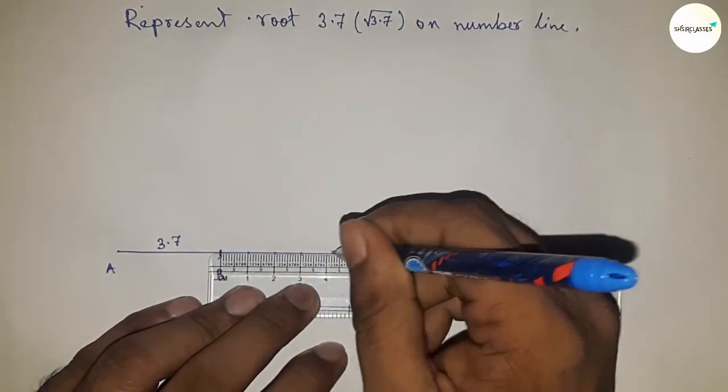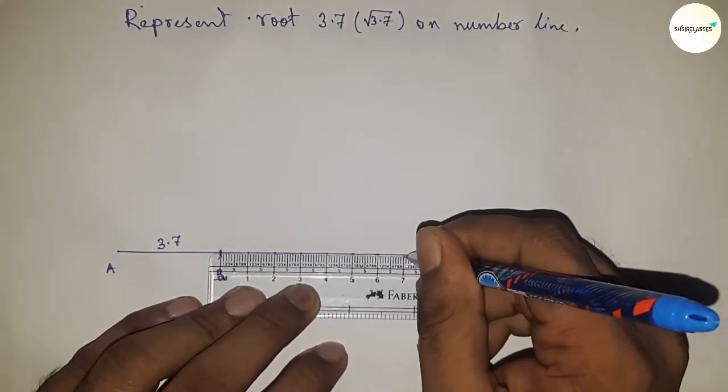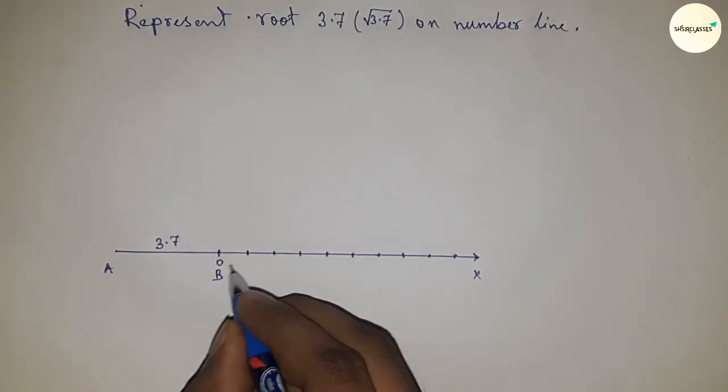Next, having to mark the numbers on the line from B to X by using scale. So this is 0, 1, 2, 3, 4, 5, 6, 7, 8. This is taking C point.